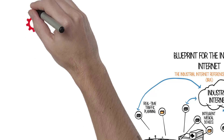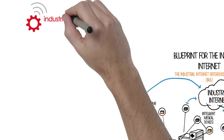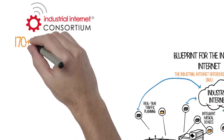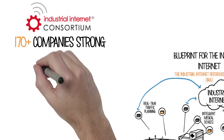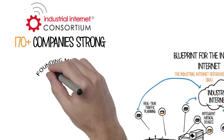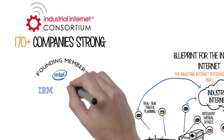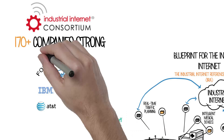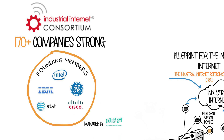The Industrial Internet Consortium is a group of experts from more than 170 companies and different industries. Their goal is to build and prove a common architecture that spans sensor to cloud, interoperates between vendors, and works across industries.